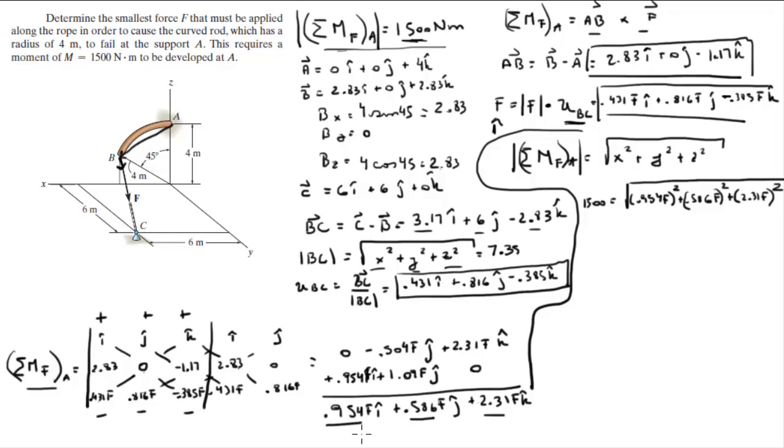So basically I plug in these three values including the variable F into this formula, and basically you square them and you add them up together, you get that this is equal to 6.58F square, and this is 1500. So 1500 is equal to 2.57F and F is equal to 584.3 newtons.